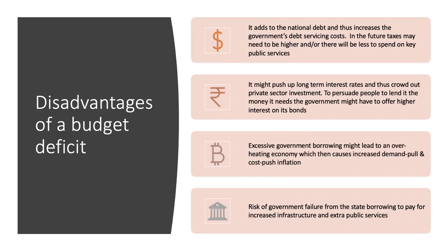The second disadvantage is the so-called crowding out theory: if the government borrows more, that might push up long-term interest rates in the bond market. To persuade investors to lend money to the government, higher interest rates may need to be offered, which would then have a dampening, negative effect on demand and investment.